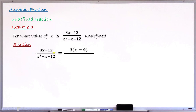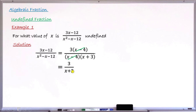Looking at the denominator x squared minus x minus 12, this is a quadratic function. Its factorization gives (x minus 4) times (x plus 3). We now see that (x minus 4) is a common factor in both the numerator and the denominator. These two cancel out. So the simplified form is 3 over (x plus 3). This is now the lowest form of this fraction, and we move to step two.